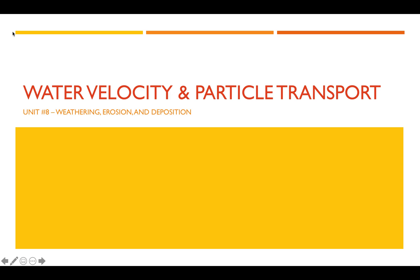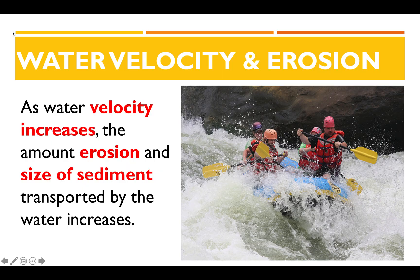In this video, we're going to learn how to determine how the velocity of a river or stream can impact the amount of sediments and the type of sediments that are transported by that river or stream. Water velocity is one of the factors that impacts how much erosion takes place. Erosion is the transport of sediments — the faster the water goes, the more transport that can take place.